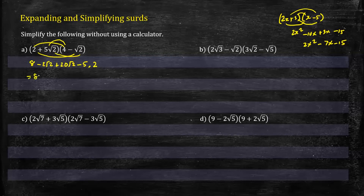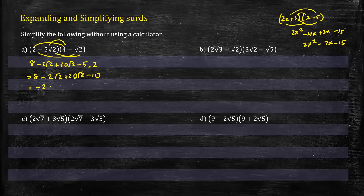So we get 8 minus 2√2 plus 20√2 minus 10. Collecting like terms: 8 minus 10 = negative 2, and 20√2 minus 2√2 = 18√2. So the answer is 18√2 minus 2.